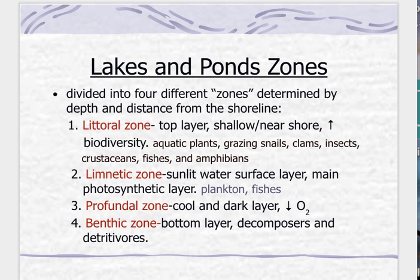When we get to lakes and ponds, we have three different types: lakes, ponds, and inland wetlands. Those are lentic, and your flowing water is going to be your streams and rivers. In your lakes and ponds, you have these different zones, and you want to memorize these zones.